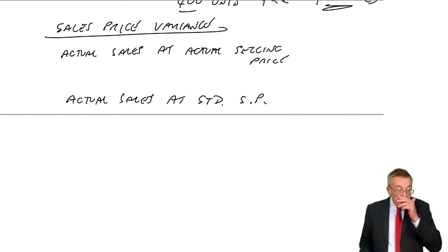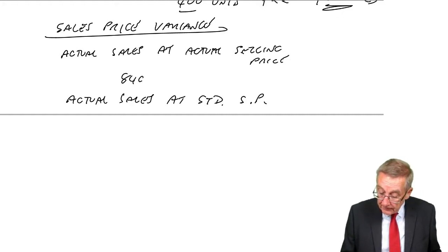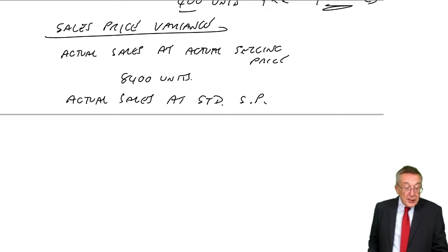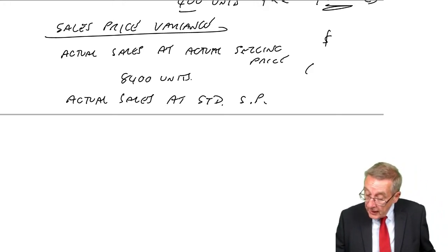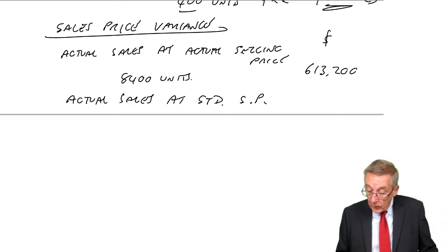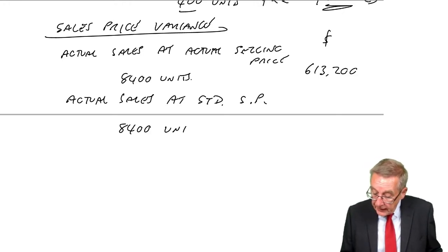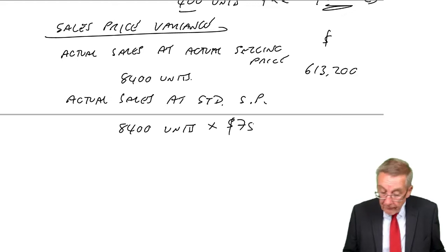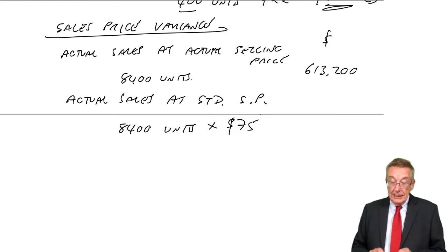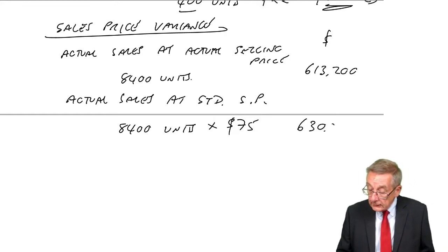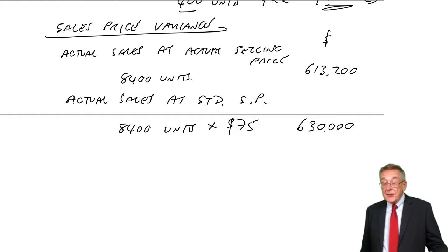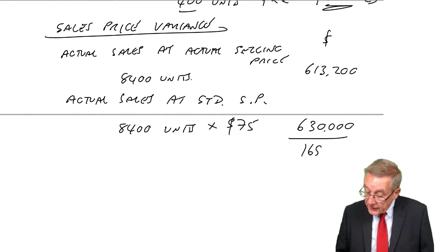Back to the question, how many did we actually sell? We actually sold 8,400 units. How much did we sell them for? Well, they actually told us the total revenue so we're going straight down, 613,200. How much should we have sold them for? Those 8,400 should have been sold at 75 per unit. 630,000.